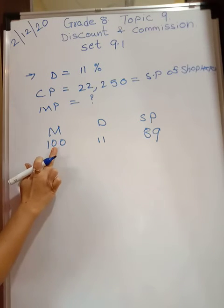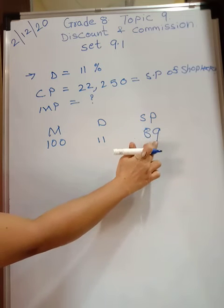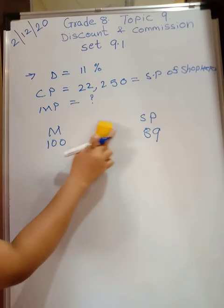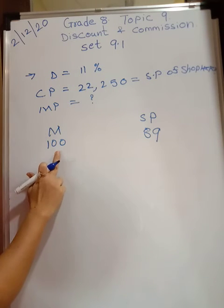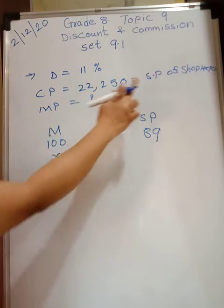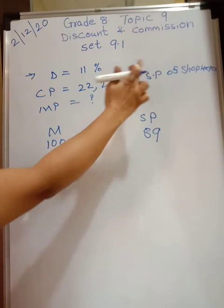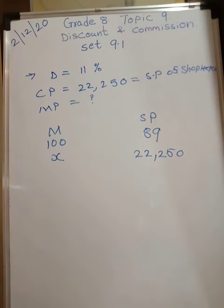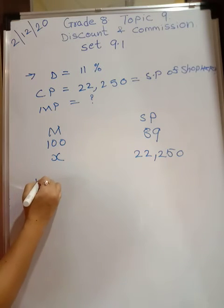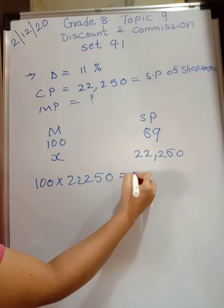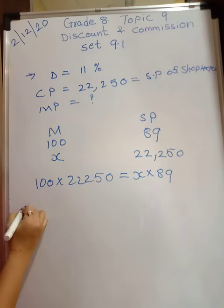So if marked price is 100 rupees, selling price is 89 rupees. We have to find the marked price x when the selling price — or cost price of the customer or selling price of the shopkeeper — is 22,250. Cross multiply: 100 into 22,250 equals x into 89.